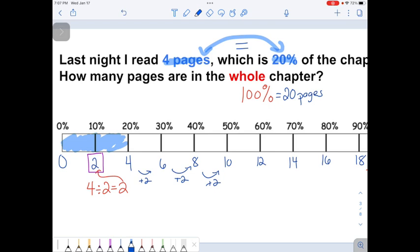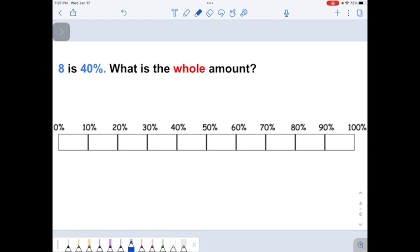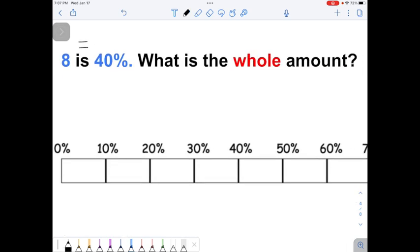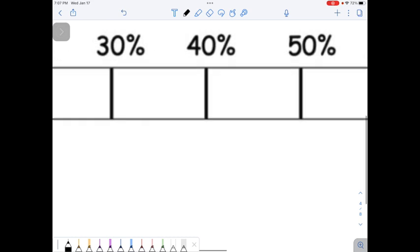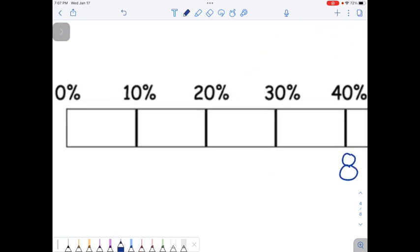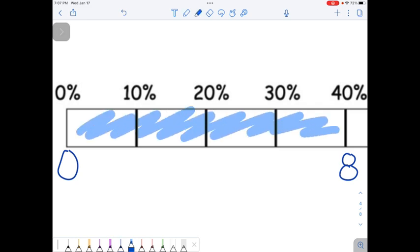Okay, let's do a problem that doesn't have context. So it's just got a bunch of math numbers. It says 8 is 40%. This is means equals. It means they have the same value. So if I can find 40%, then I can write 8 underneath. 8 is 40%. What is the whole amount? What is 100%? So let's just zoom in on what we do know. We know a 0 goes here. I can see there are 1, 2, 3, 4 parts.